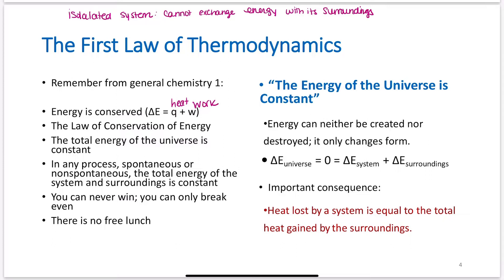The energy of an isolated system is constant. The change in energy of the universe equals zero: ΔE(universe) = ΔE(system) + ΔE(surroundings) = 0. Energy can be transferred between system and surroundings, but the overall change is zero. Heat lost by a system is equal to the heat gained by the surroundings — an important consequence of the first law.